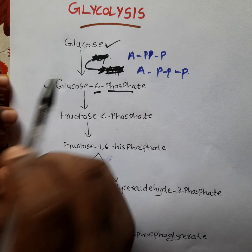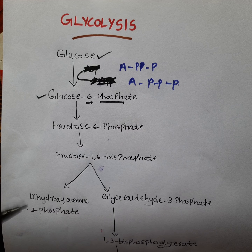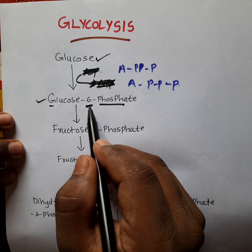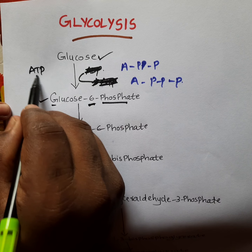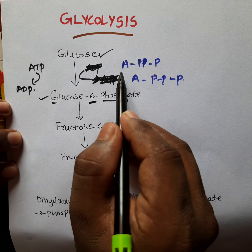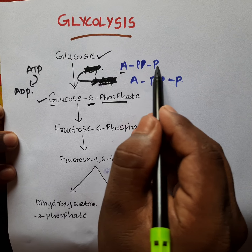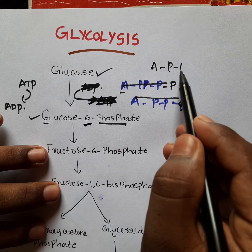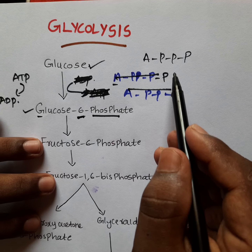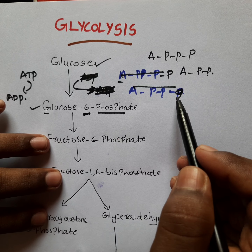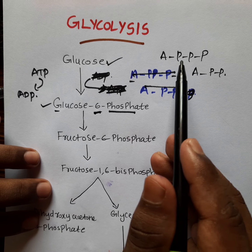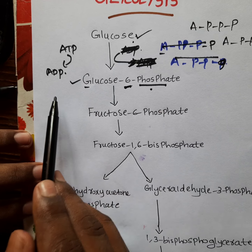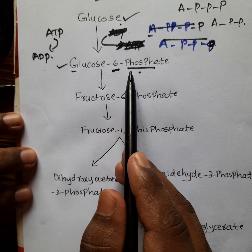First, glucose converts into glucose 6-phosphate. In glucose 6-phosphate, you can see one phosphate group at the sixth position. This phosphate group is given by ATP, which converts into ADP — ATP has three phosphate groups, ADP has two. The enzyme that activates this conversion is hexokinase.